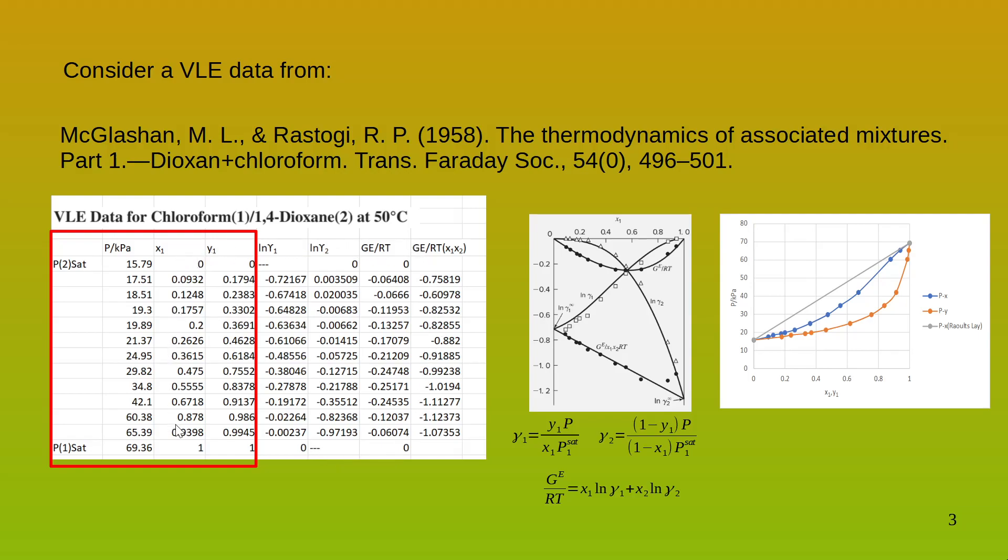First of all, if we plot X1 versus gamma 1, this is the plot we get. And we extend this plot to X is equal to 0. So this would be the infinite dilution gamma of component X1. Well, at this point, X2 is the maximum and at X1 is equal to 0, we can say that X1 is infinitely diluted. The similar reasoning applies to the plot of ln gamma 2.